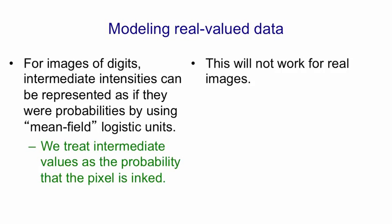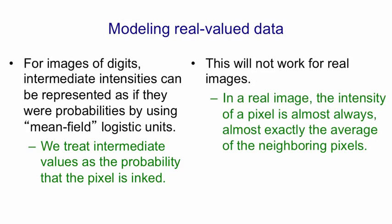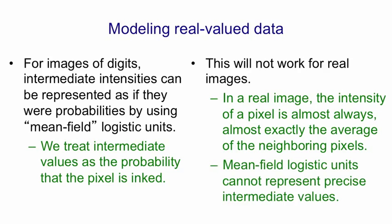However, it won't work for real images. In a real image, the intensity of a pixel is almost always almost exactly the average of its neighbors. So it's got a very high probability of being very close to that average and a very small probability of being a little further away. You can't achieve that with a logistic unit. Mean field logistic units are unable to represent things like the intensity is 0.69, but very unlikely to be 0.71 or 0.67. So we need some other kind of unit.